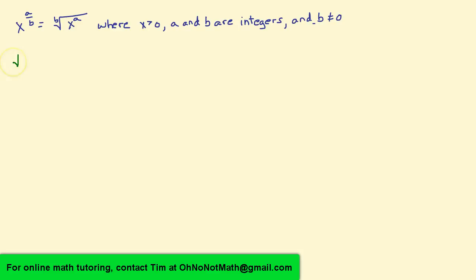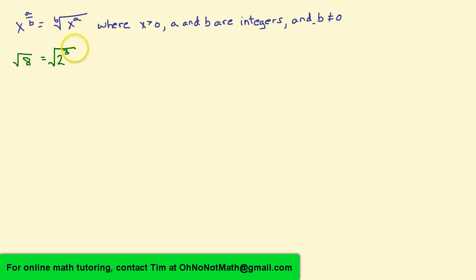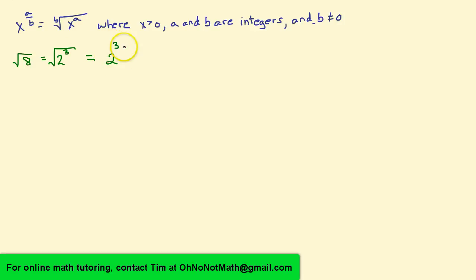The first one is the square root of 8. The first thing we want to do is factor the number 8 in terms of its prime factors, so that would be 2 cubed. So we have the square root of 2 cubed, which equals 2 raised to the power of 3 over 2.